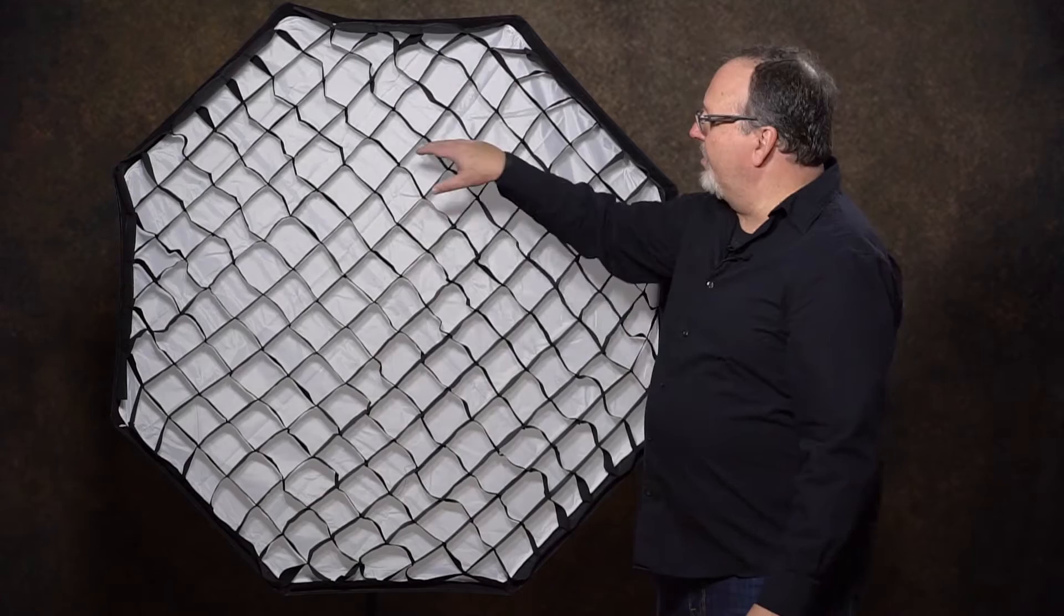We've got two layers of diffusion. Why? Because it helps scatter those light rays in different directions, and that really reduces specularity. Softness is a function of the size of the box. Reduced specularity is because we're using double diffusion.